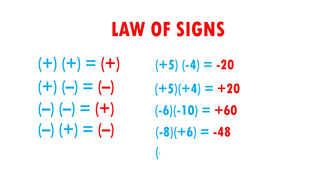Now, minus seven times positive one. Negative times positive gives me negative, and seven times one is seven. The result is minus seven. Very easy, right?